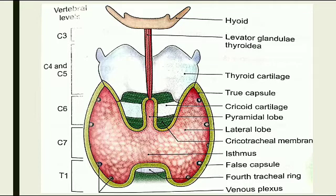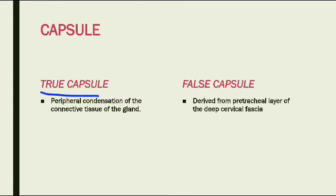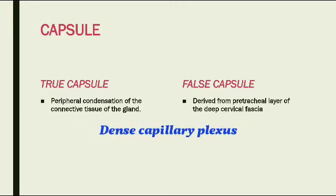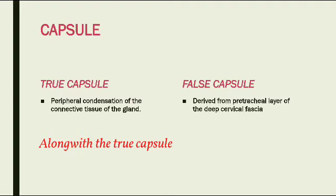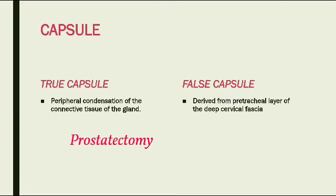The true capsule is the peripheral condensation of the connective tissue of the gland. Deep to the true capsule there is a dense capillary plexus. During operations on the thyroid gland, the gland should be removed along with the true capsule because of this deep venous capillary plexus beneath it. This is comparable to prostatectomy, where the venous plexus lies between the two capsules of the prostate gland, so the capsules are left behind in that case.